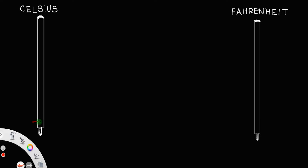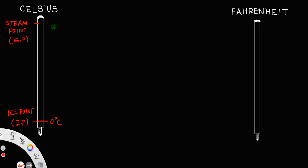Suppose the lower point, or the ice point — let us call that as IP — the ice point of the Celsius scale is equal to 0 degrees Celsius. And the steam point — let us call that as SP — the steam point of the Celsius scale is equal to 100 degrees Celsius.